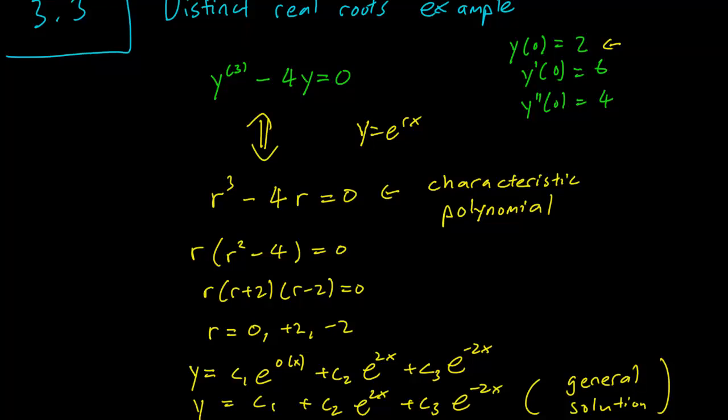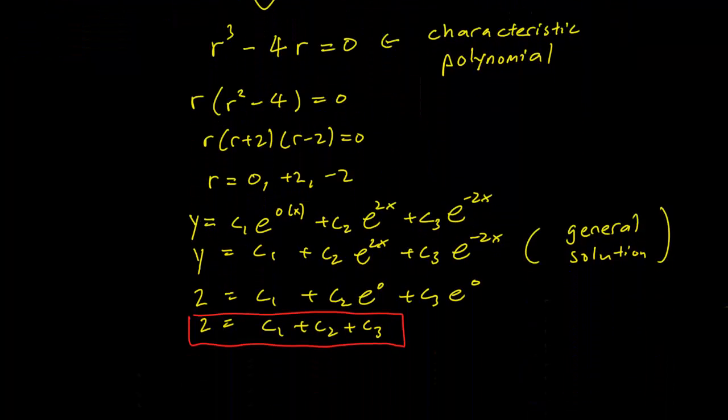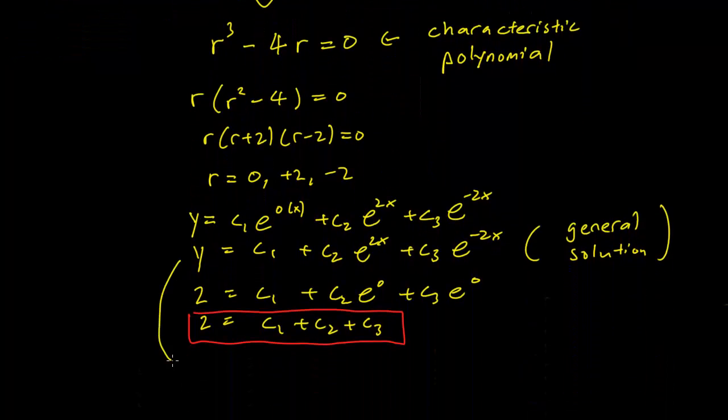So let's see how we can use our second equation. It's information about the derivative of y. So derivative of y equals 6 when x equals 0. So let's just take the general solution and differentiate it. So c₁ becomes 0, c₂ becomes c₂ times 2 times e^(2x) plus c₃ times minus 2 times e^(-2x).